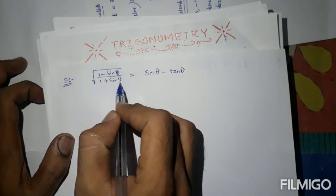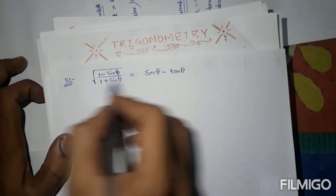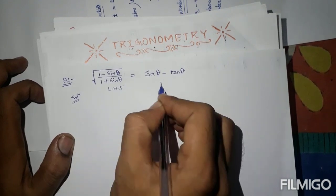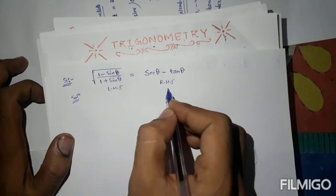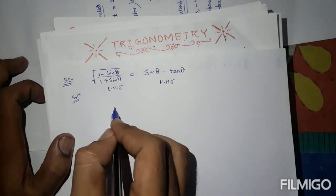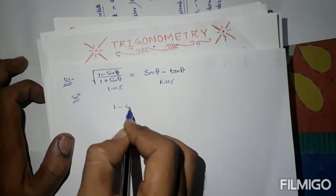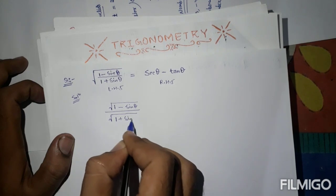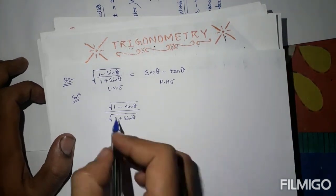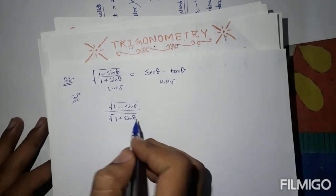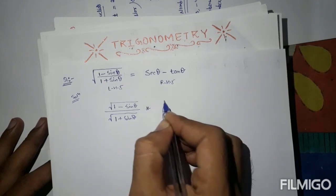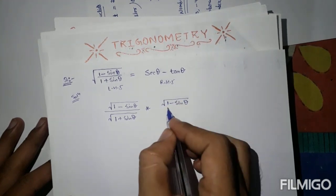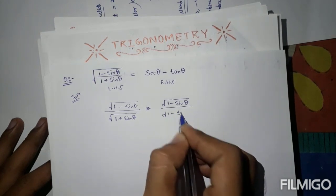To solve this question, we have LHS on the left hand side and RHS on the right hand side. Take LHS: square root of (1 minus sine theta) upon square root of (1 plus sine theta). To solve this we multiply both numerator and denominator by square root of (1 minus sine theta) upon (1 minus sine theta).